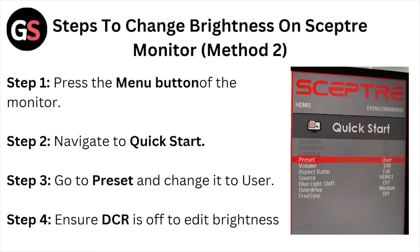Steps to change the brightness on the Sceptre monitor, method number two. Press the menu button on the monitor and navigate to the quick start. Step three: go to the preset and change it to user. Step four: ensure the DCR is off to edit the brightness.